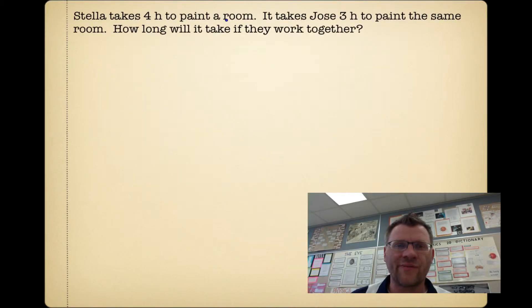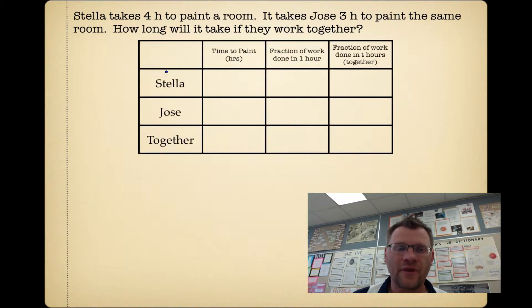If Stella takes 4 hours to paint a room, it takes Jose 3 hours to paint the same room. How long will it take if they work together? For this sort of question, you might not know where to start, but a good place to start is to make a table of values. We've got Stella, Jose, and together. We've got the time to paint in hours, the fraction of the work done in 1 hour, and the fraction of the work done in t hours, which would be together. Stella takes 4 hours to paint the room, Jose takes 3 hours, and together we're going to call that t, which is a variable that we don't know.